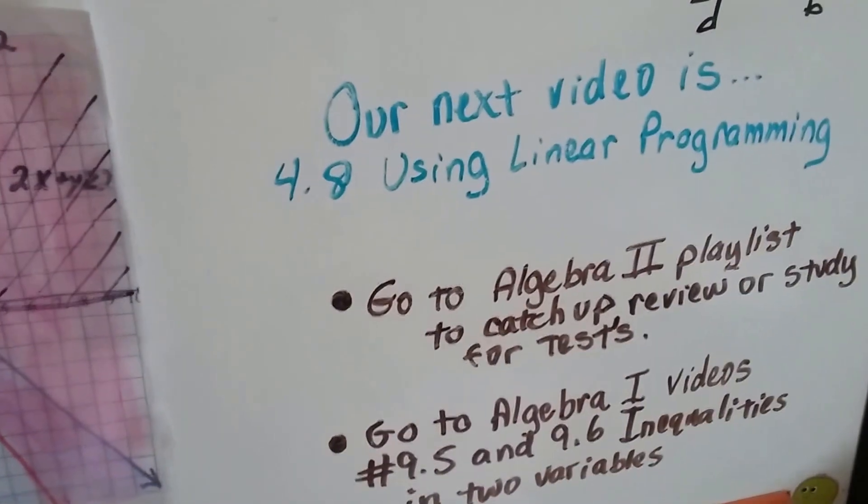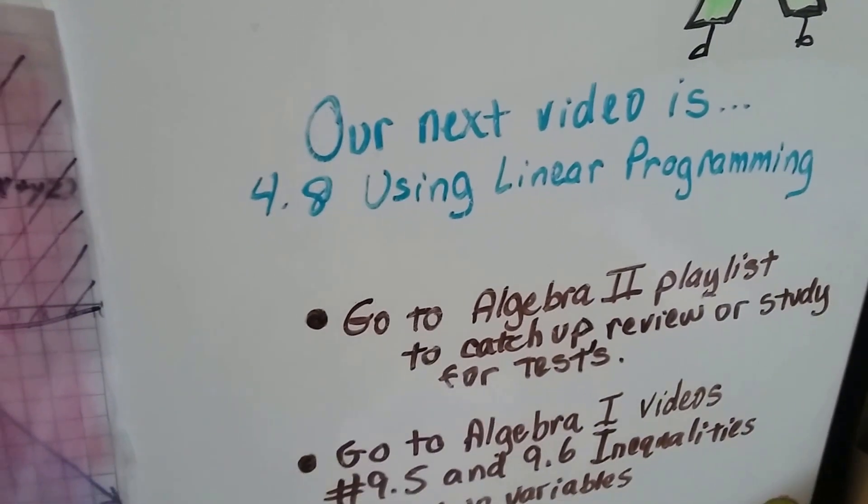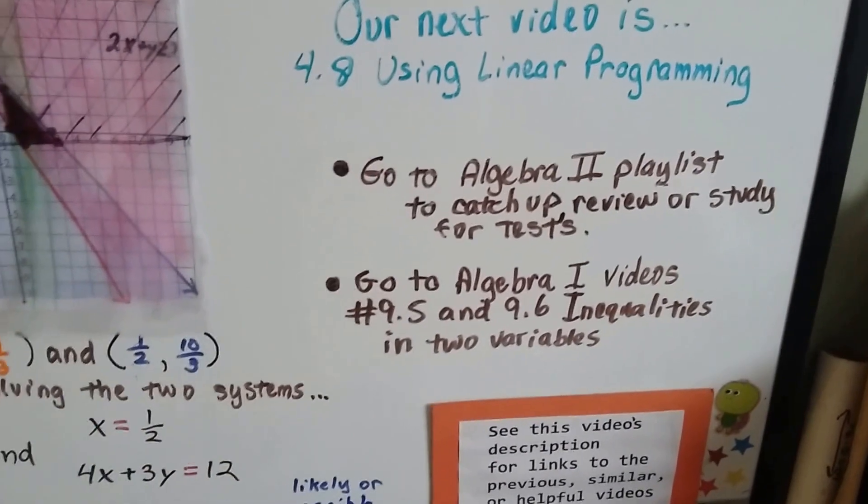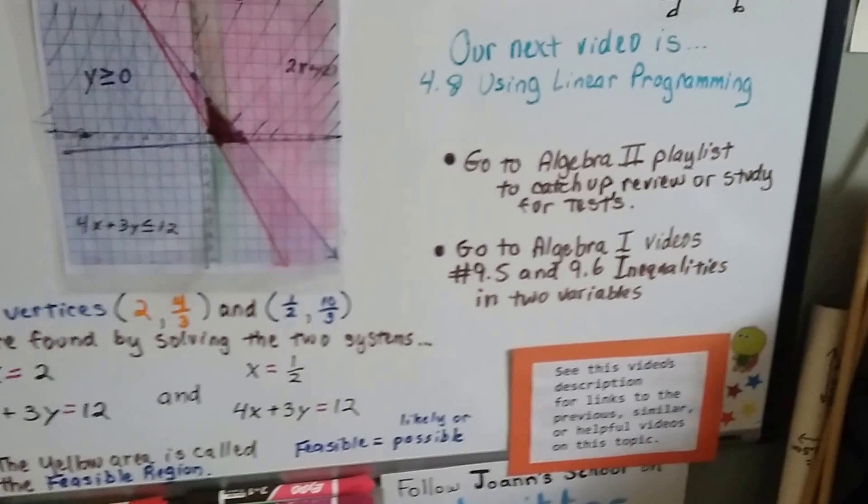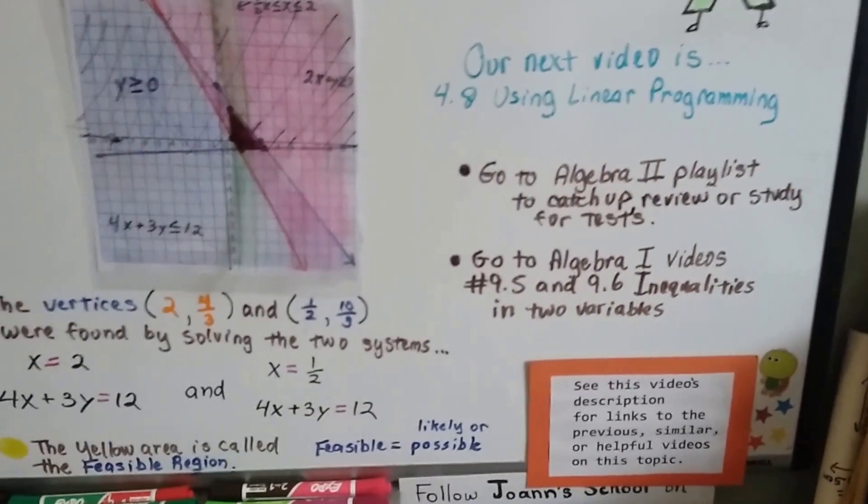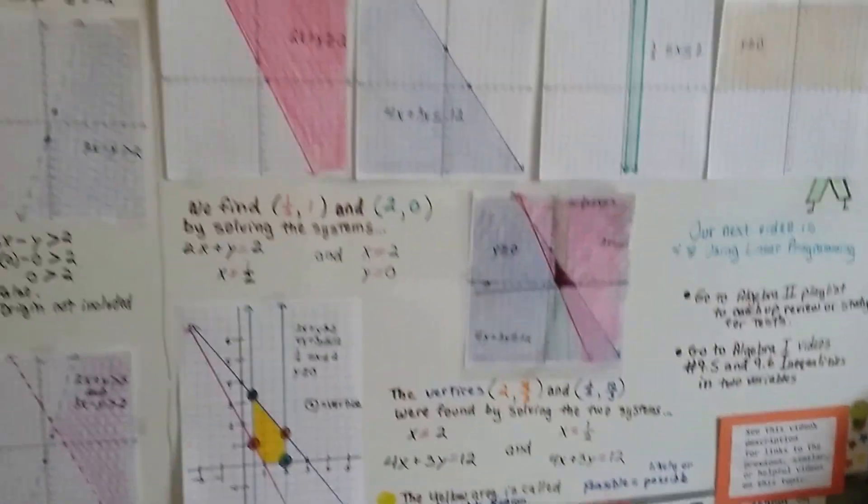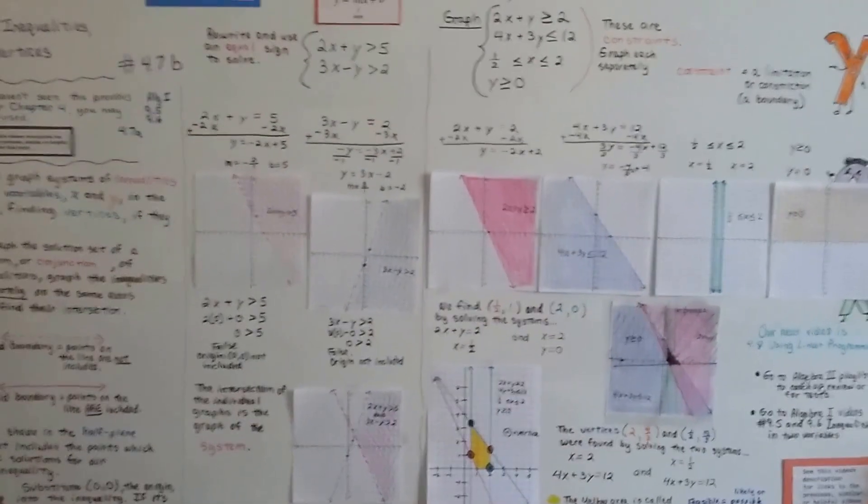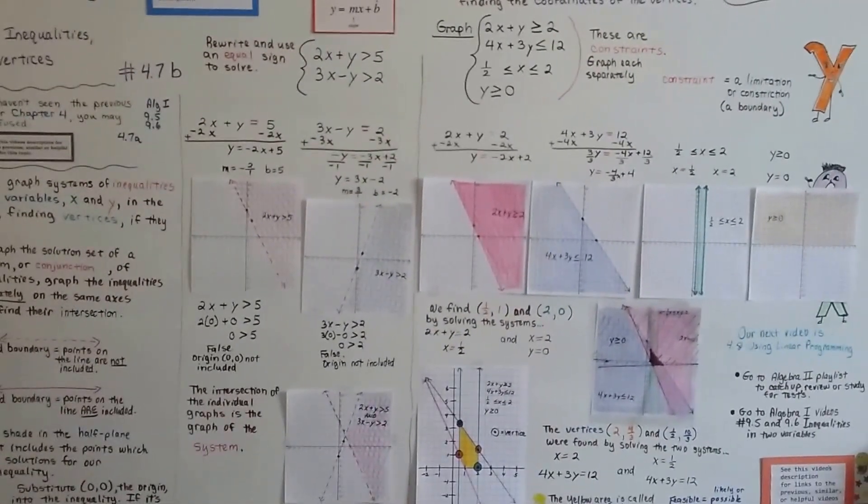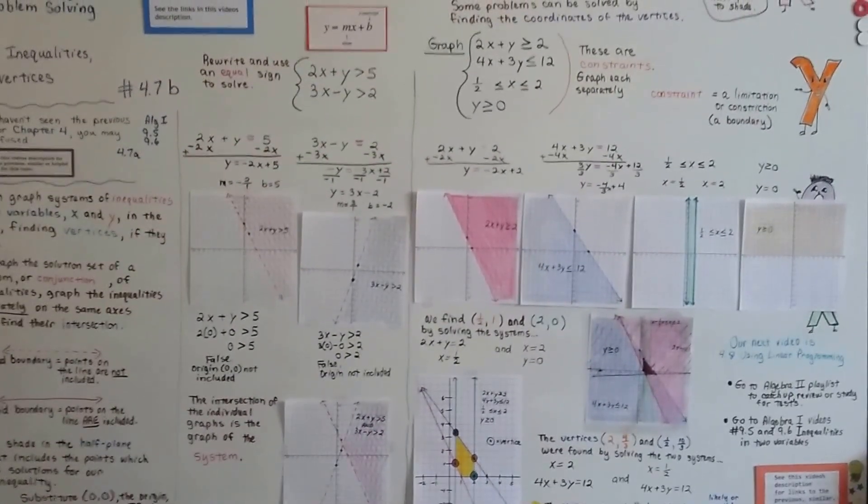Our next video is 4.8 and we're going to talk about using linear programming. We're going to talk about constraints some more. I'm going to add this video to the Algebra 2 playlist so you can use it for studying, catching up, or whatever. And there's going to be links to the previous video, 4.7a, and those two Algebra 1 videos when I taught this last year. And between this video, the ones I taught last year, and the next one, you should really understand what's going on. I'd say watch these four videos and you should have no problem. I think you can do this. It's not as hard as it looks. All right? Bye.